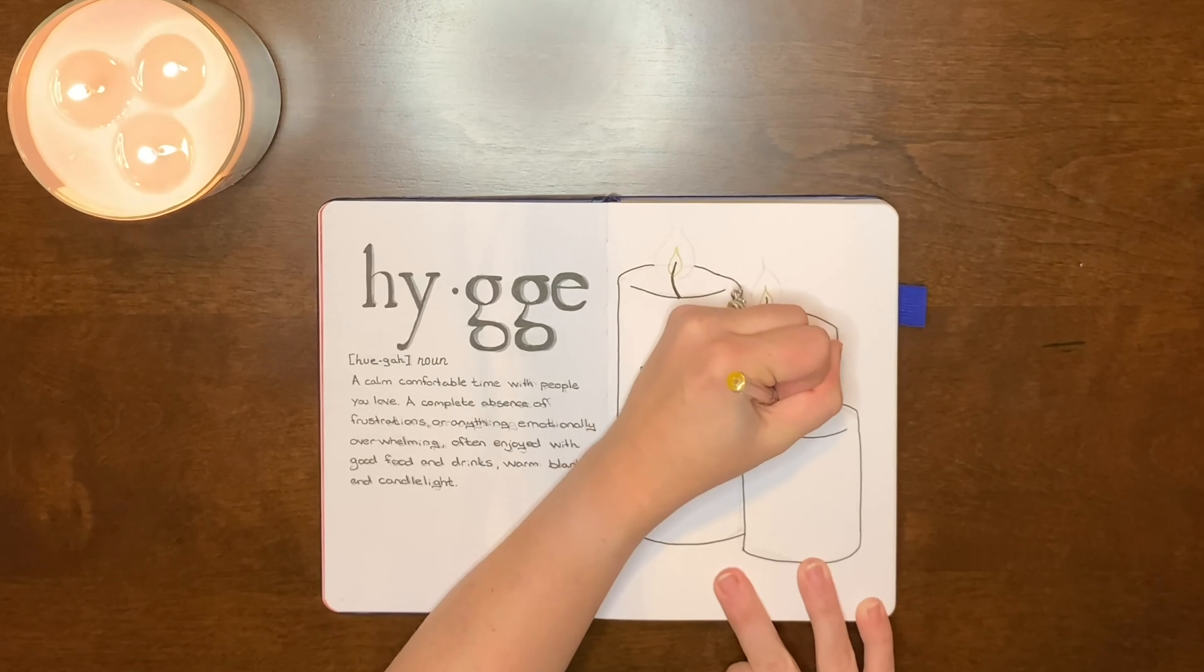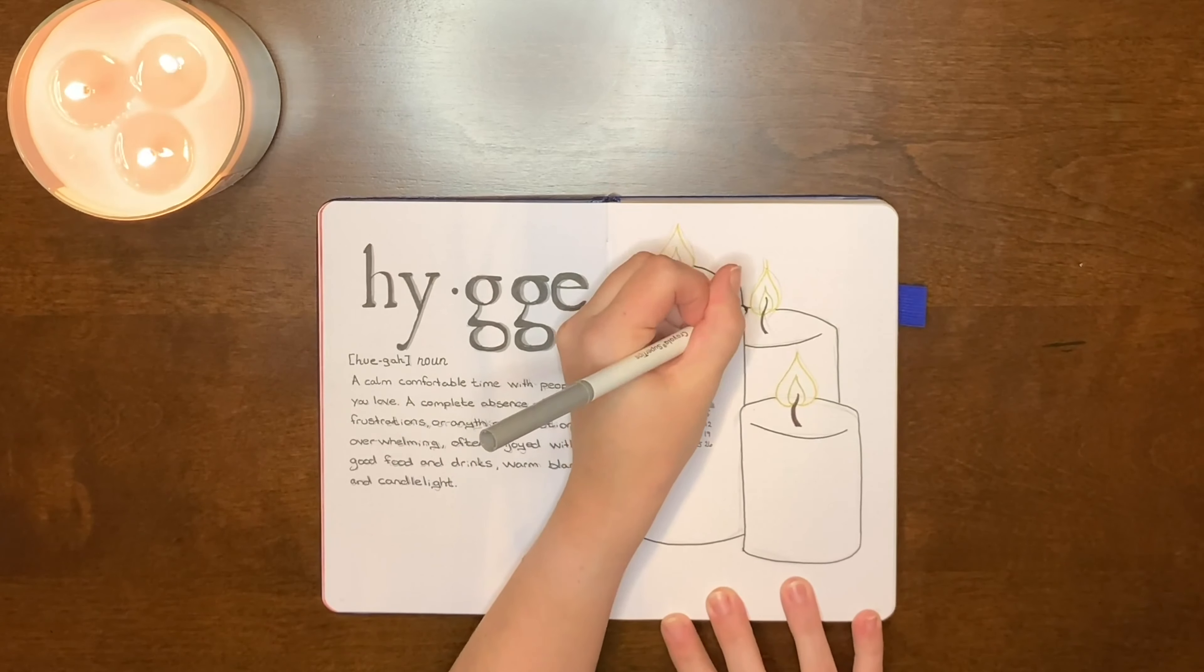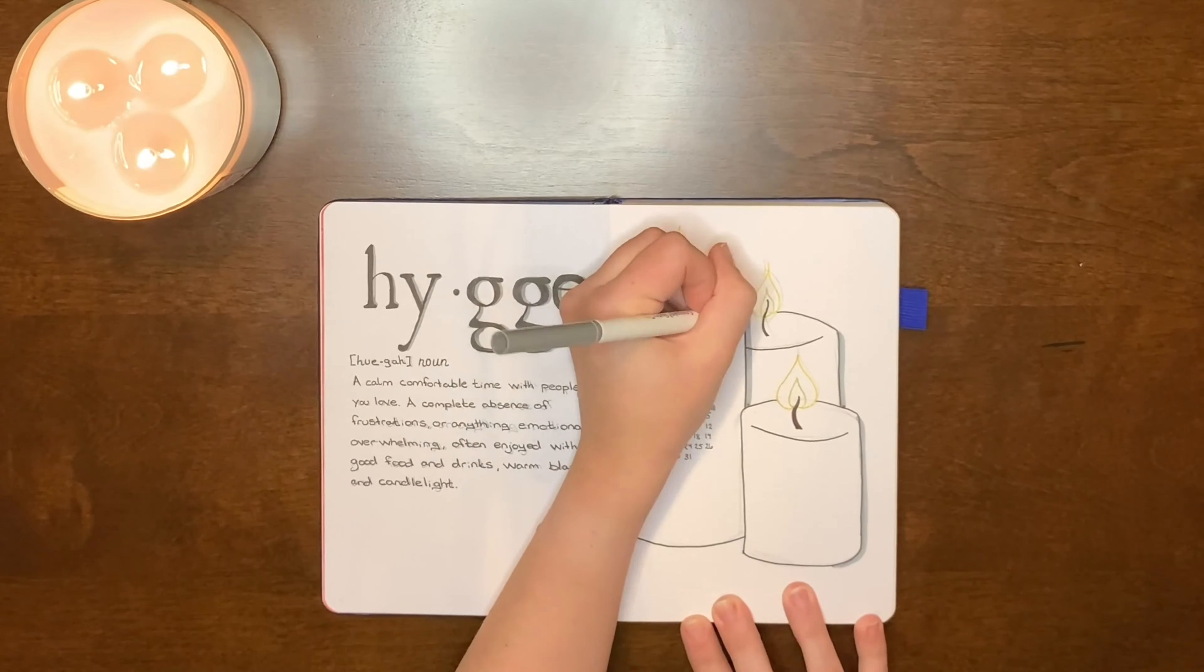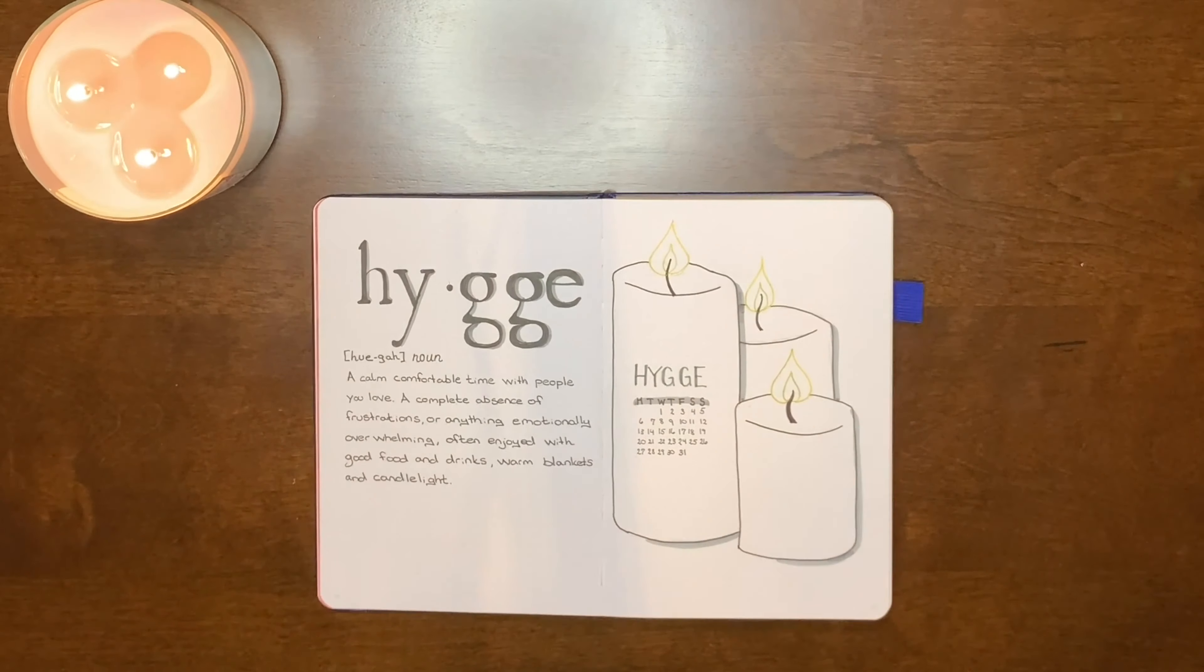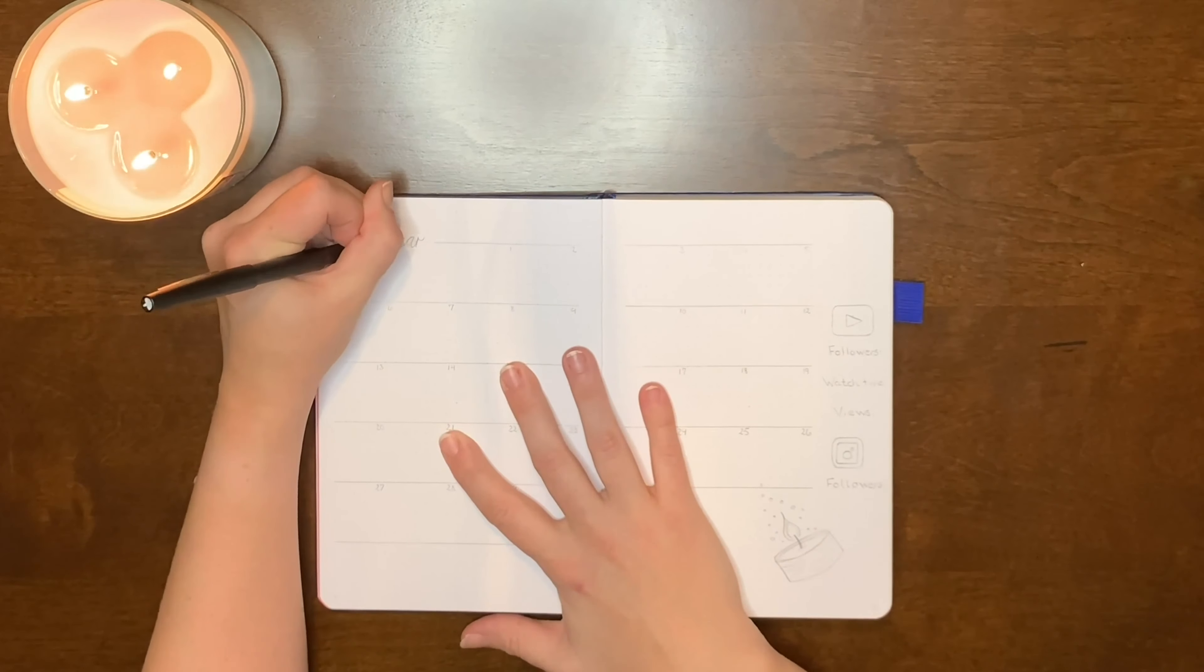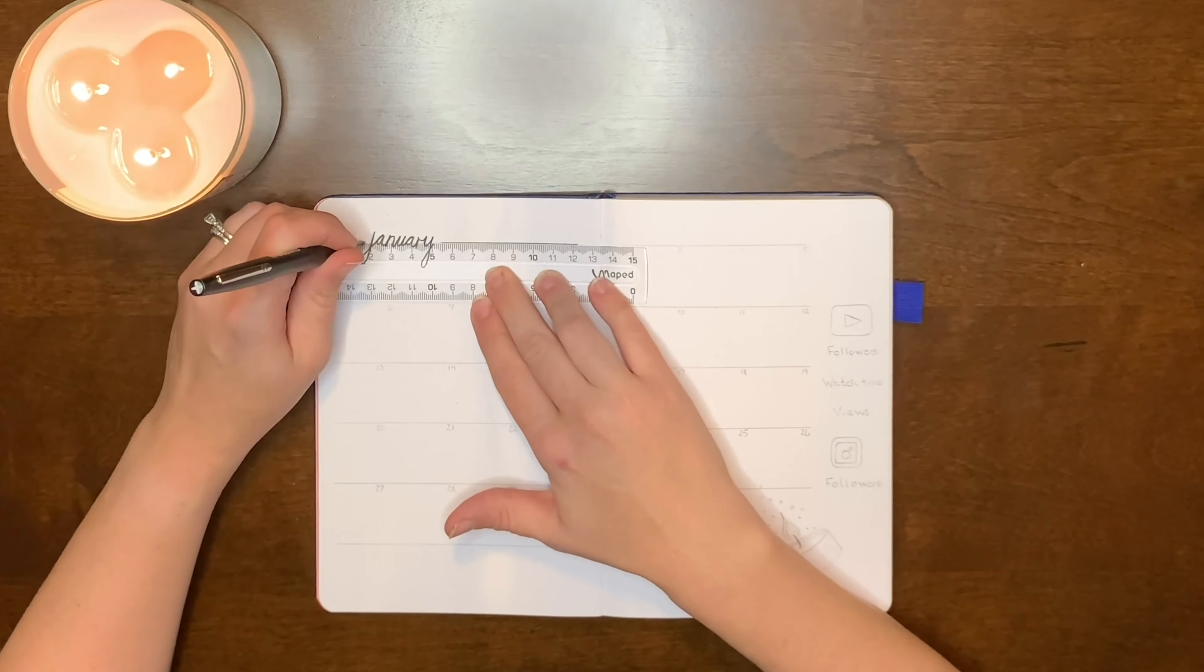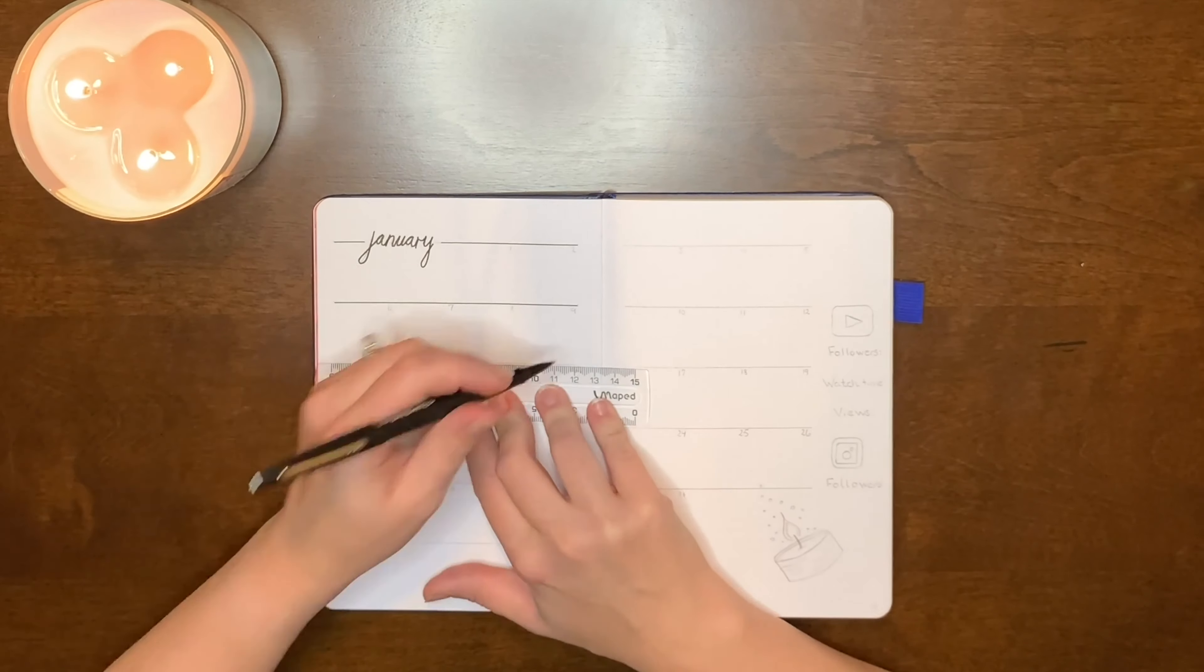But I just love how clean and simple this came together. Now I did just use black and gray colors this month, except for the little pop of gold in the candlelight. Other than that, it is all gray and black. I needed it, like I said, just to be simple, a fresh, clean start. And I love how it came together.